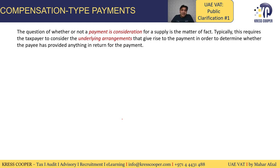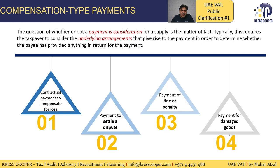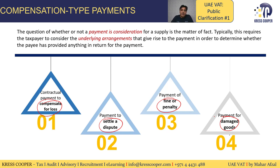The question of whether a payment is a consideration for a supply is a matter of fact, requiring the taxpayer to consider the underlying arrangements between supplier and customer. Based on these arrangements, we can decide whether a supply exists or not. In this public clarification, the content is classified into four sections: first, contractual payment to compensate for loss; second, settlement of dispute; third, fine or penalty; and fourth, damaged goods.